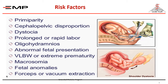Risk factors include: prematurity, very low birth weight, extremely preterm babies, primiparity, cephalopelvic disproportion, prolonged or rapid labor, oligohydramnios, abnormal fetal presentation, macrosomia such as in infants of diabetic mothers, fetal anomalies, and use of forceps or vacuum extraction.